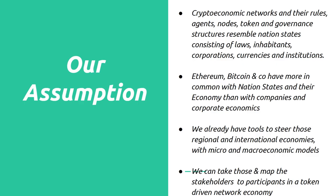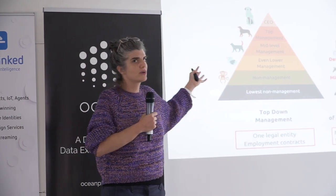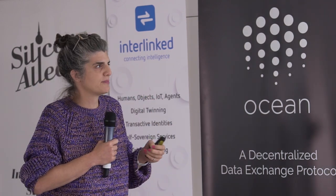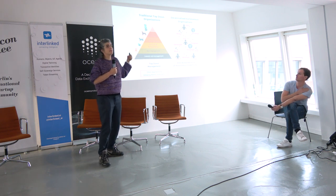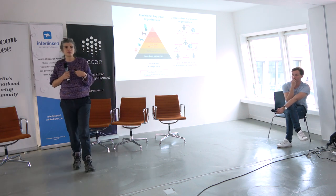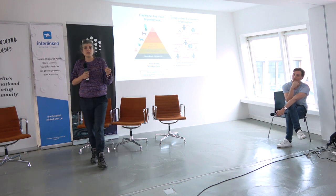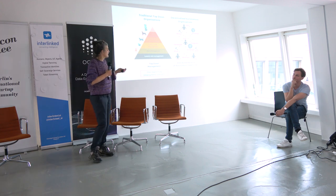Our assumption is that crypto economic networks - this is the world we're moving to thanks to Bitcoin and blockchain - are steered by a token: a distributed network of autonomous stakeholders automatically running in the same direction. These networks resemble nation states much more than companies. So we cannot use tools from business administration or engineering to design them - we need tools from economics to design these networks.